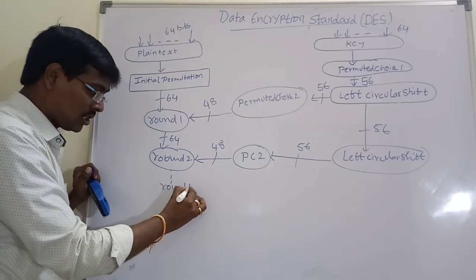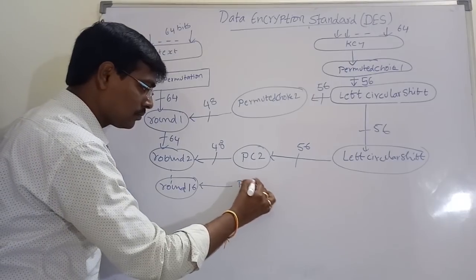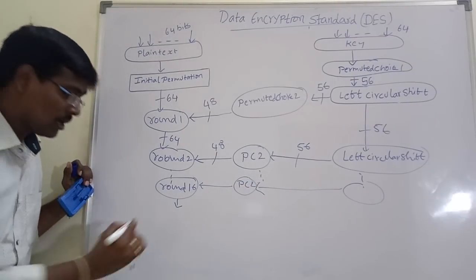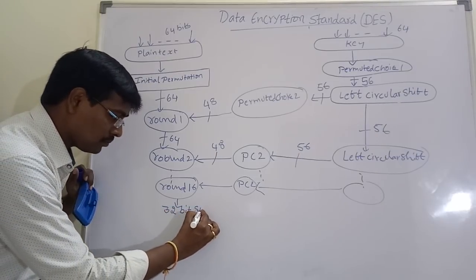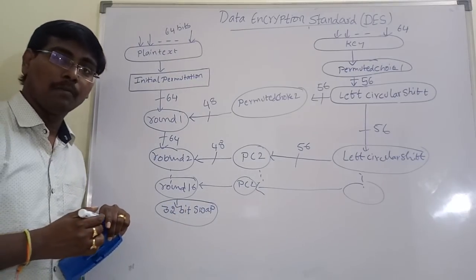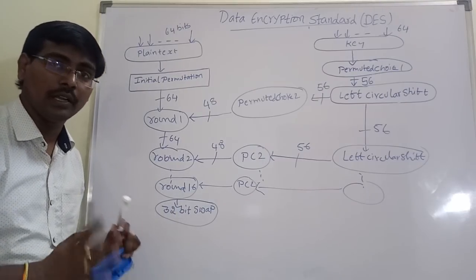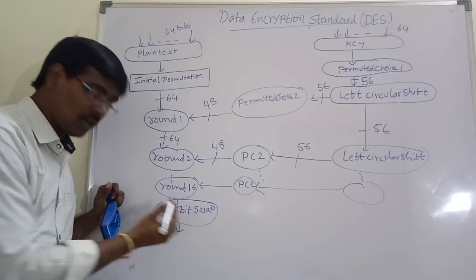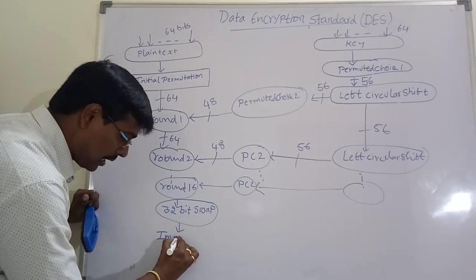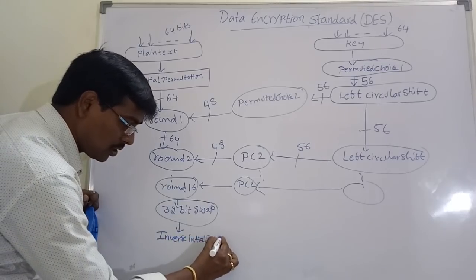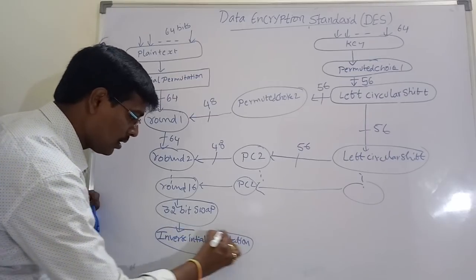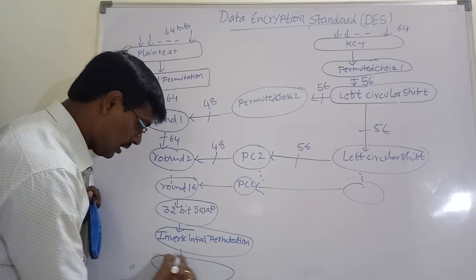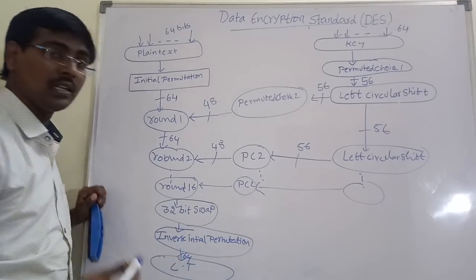The same procedure is applied for all 16 rounds. After completion of the 16th round, we perform a 32-bit swap. A 32-bit swap means the left 32 bits and right 32 bits are simply interchanged — bits 1 to 32 become 33 to 64, and bits 33 to 64 become 1 to 32. After swapping, we finally perform inverse initial permutation, which changes the positions of the bits, and we obtain the 64-bit ciphertext.